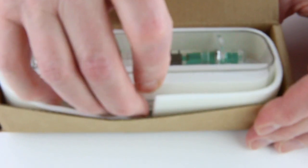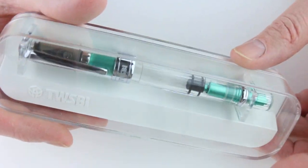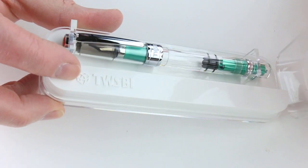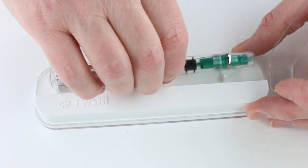The pen comes in a plastic box with a clear transparent lid that lifts off. You can see the TWSBI logo on the bed of the box, and there are little brackets that hold the pen in place.